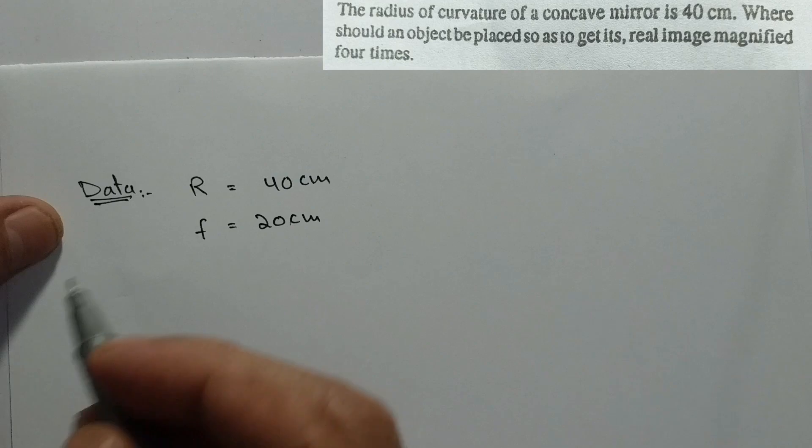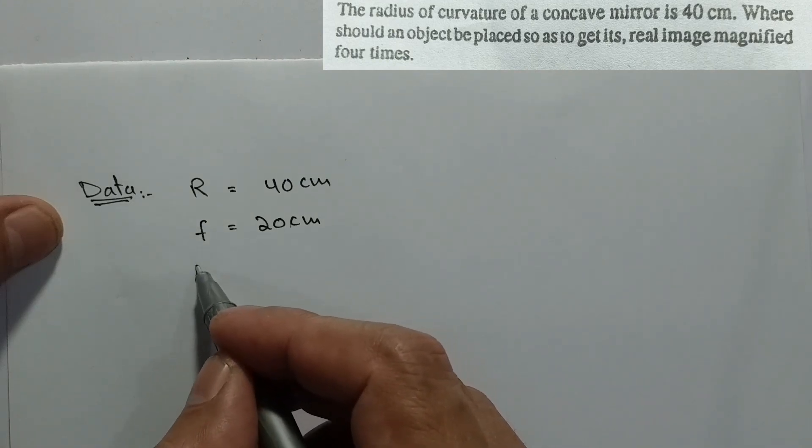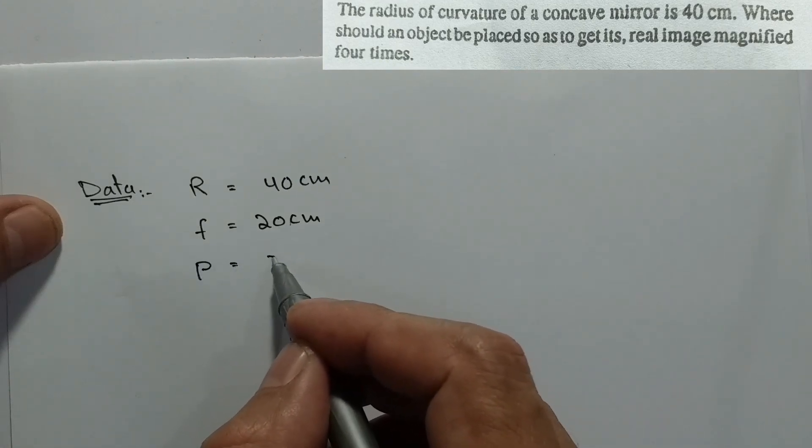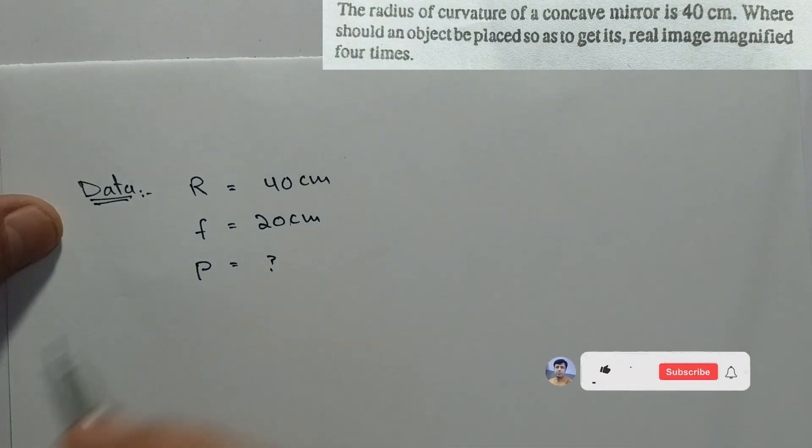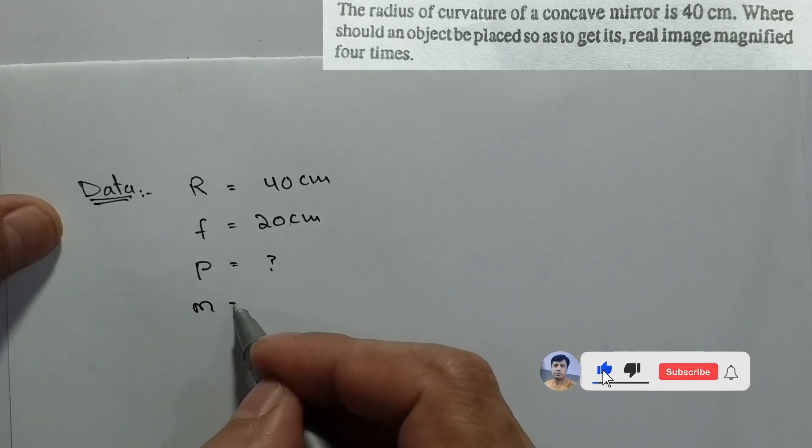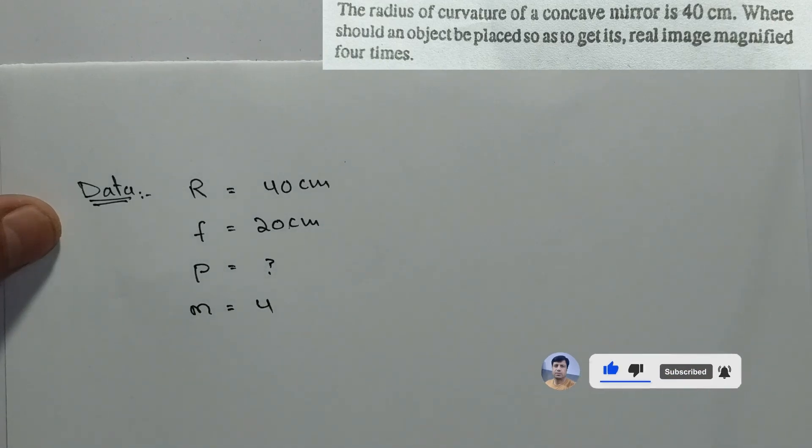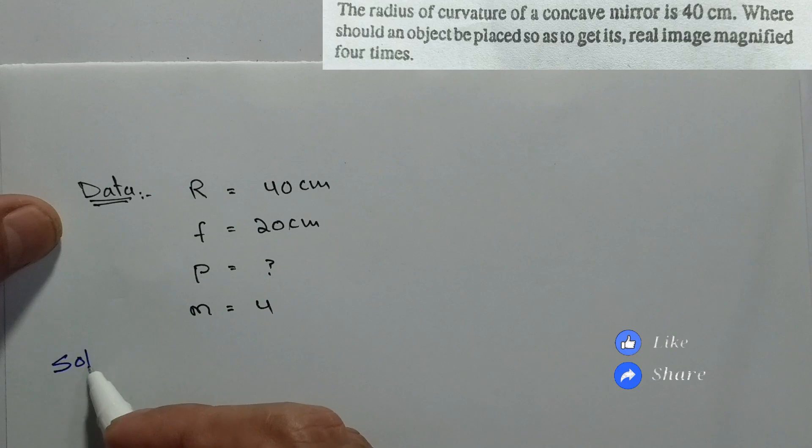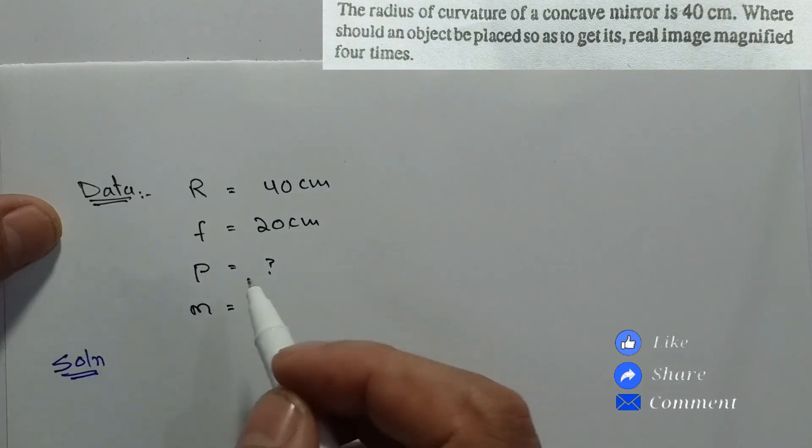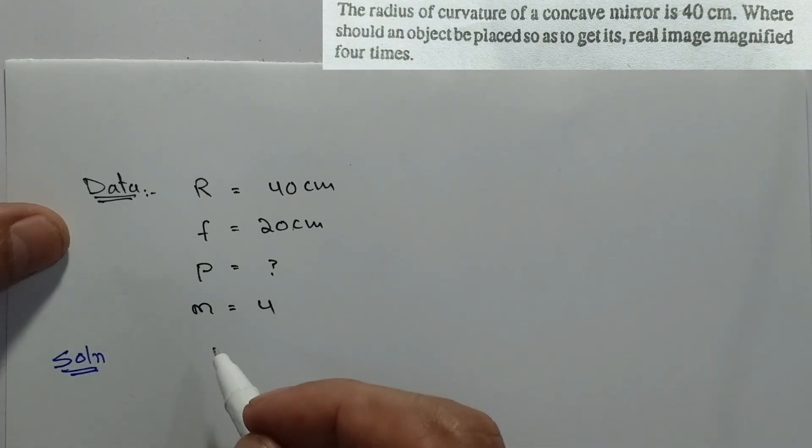Now we need to find where to place the object. We are given that magnification is four times. Let's see how to solve this solution.